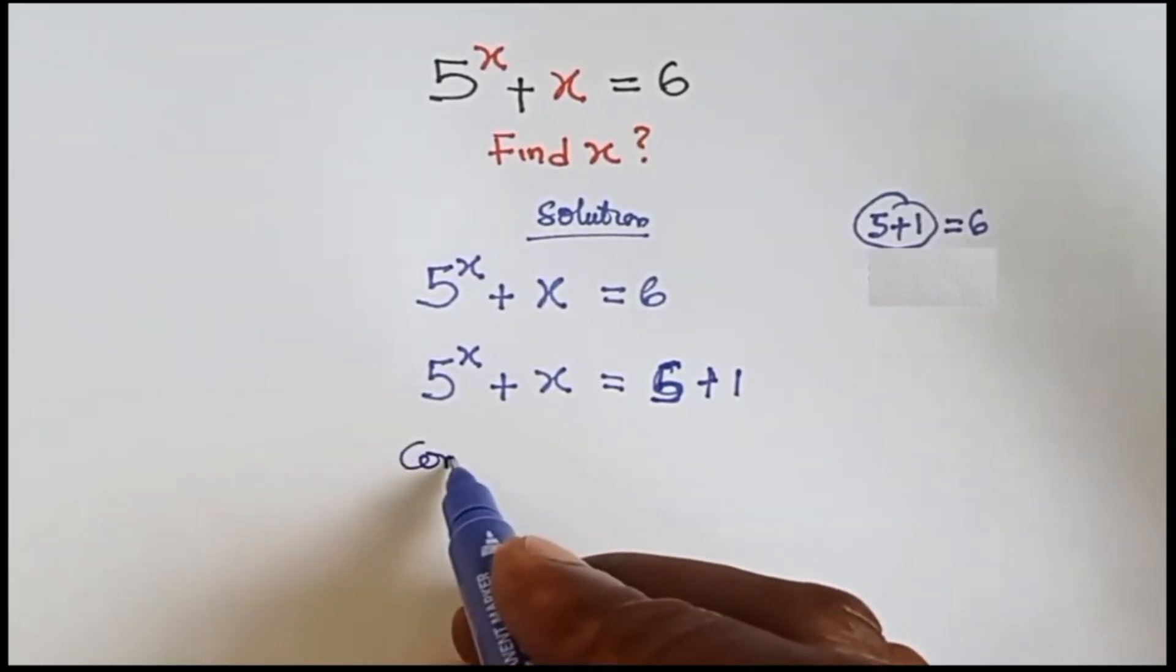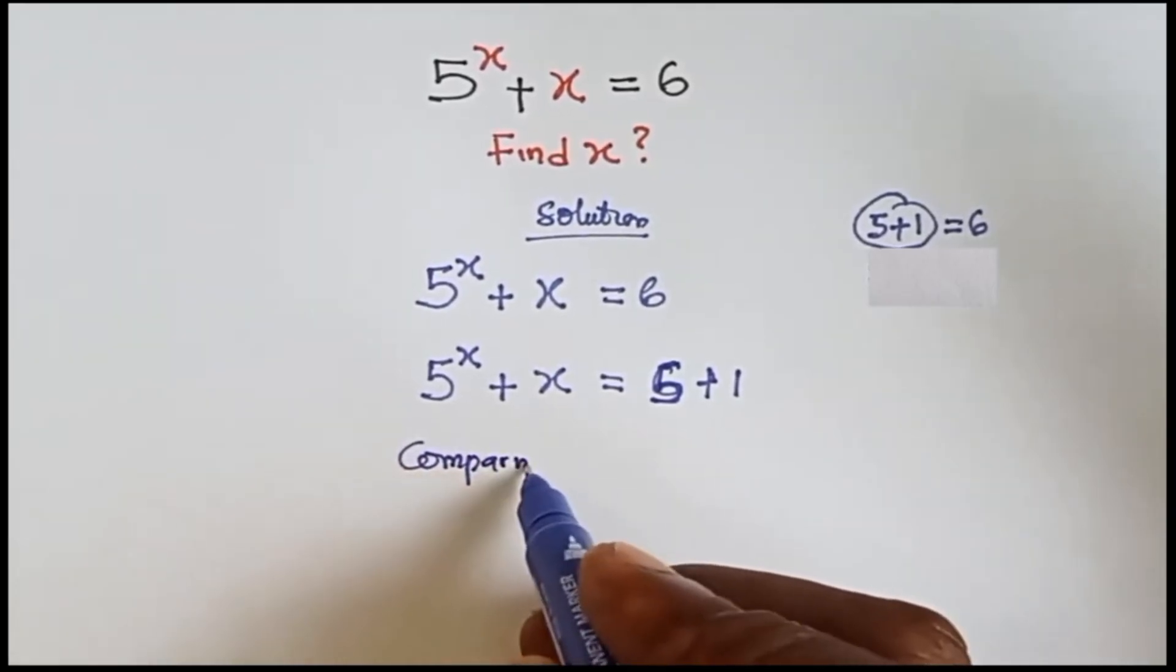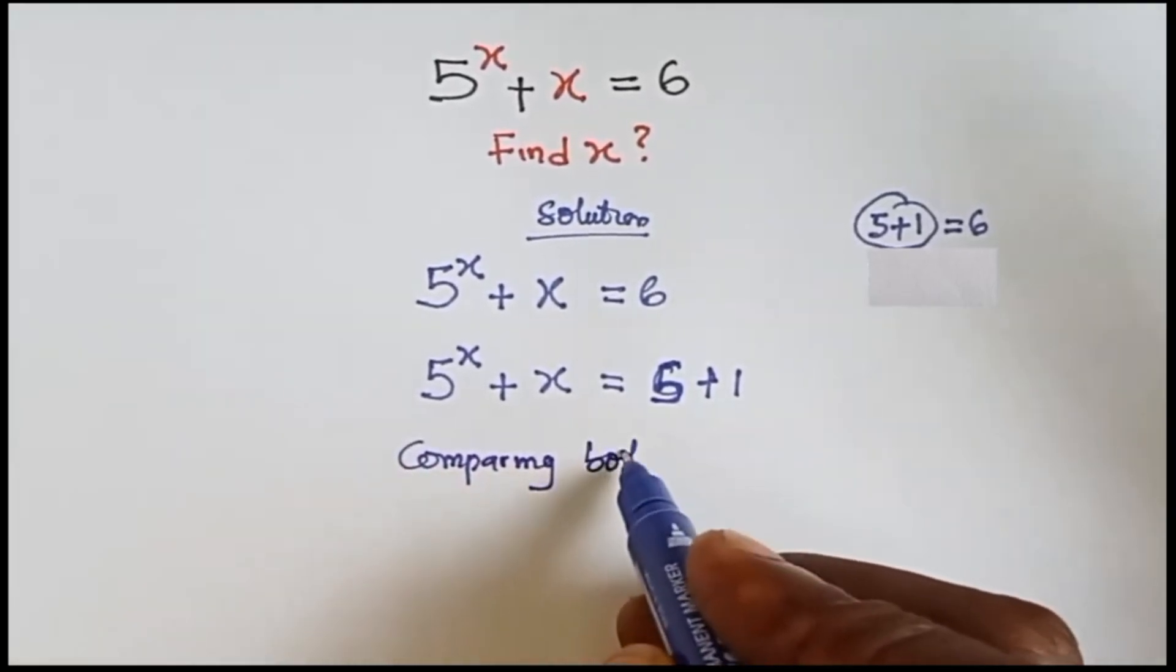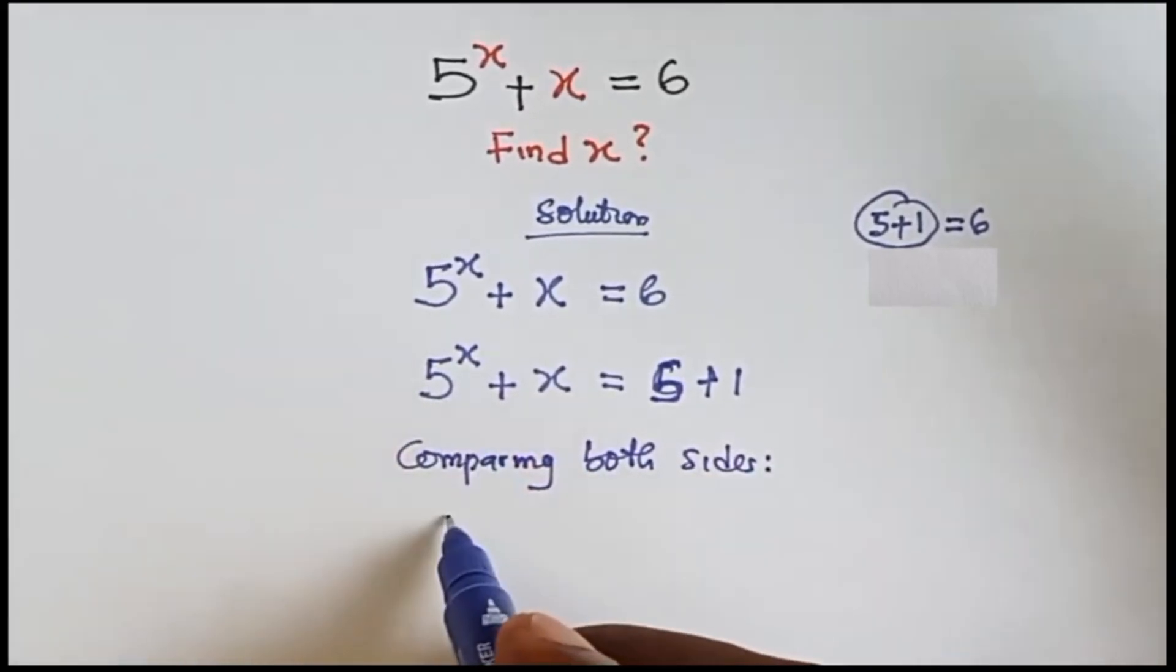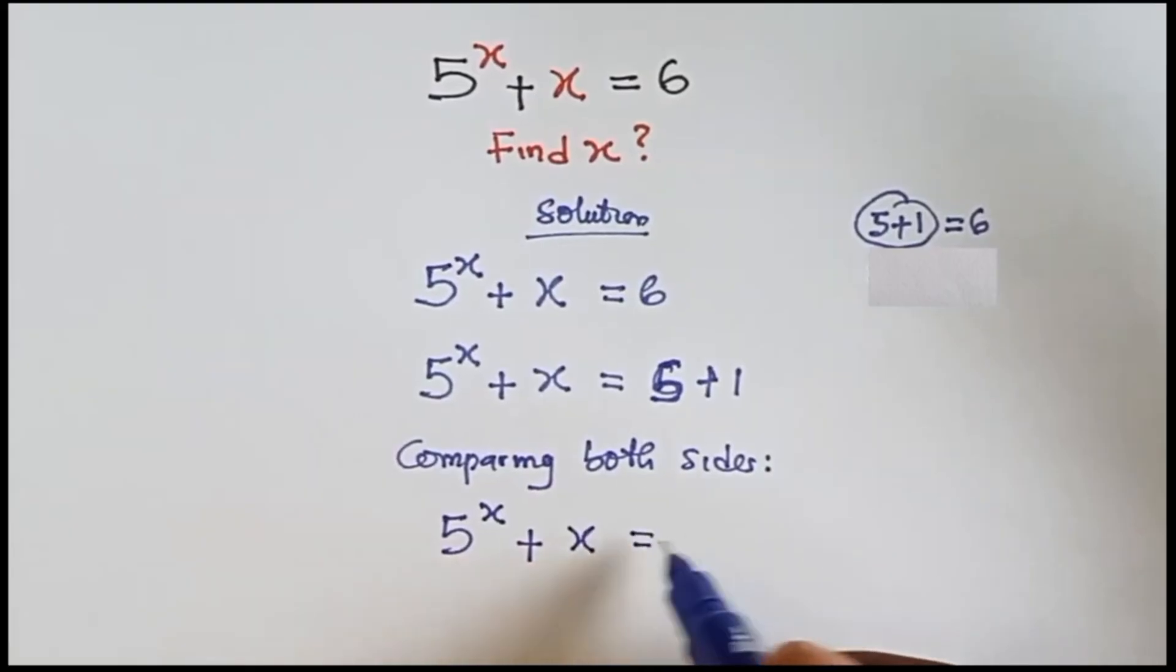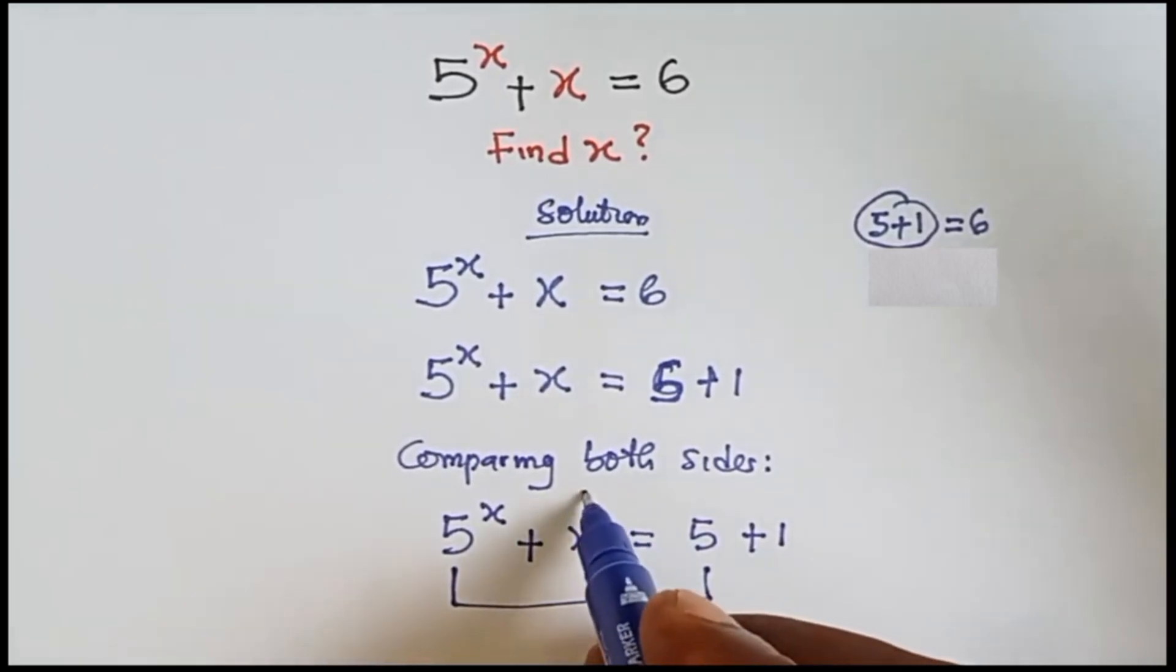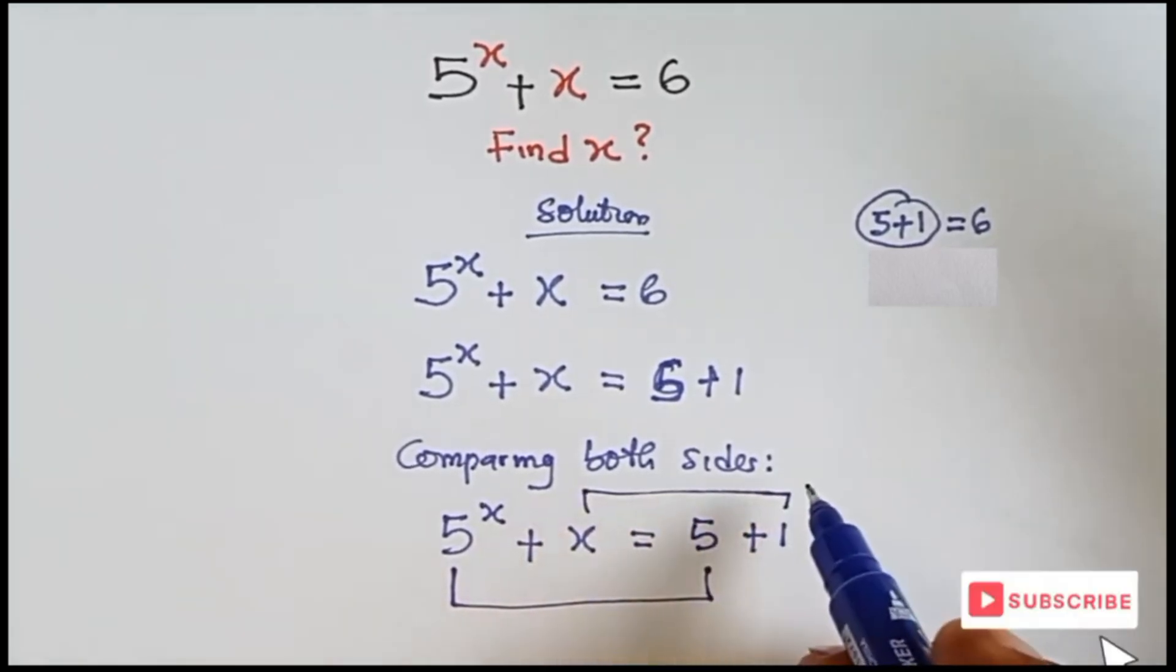Now we can compare both sides. This means we have 5 raised to the power x plus x equals 5 plus 1. So 5 raised to the power x equals 5, while x equals 1.